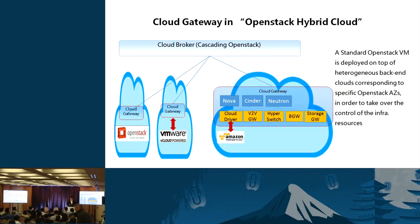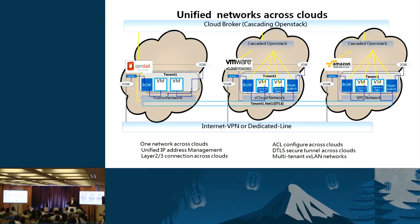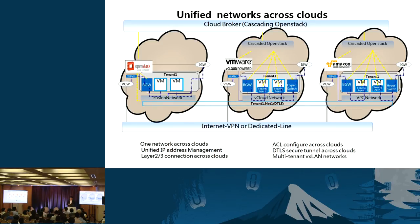These standardized cloud gateways are deployed on top of heterogeneous backend clouds corresponding to a specific OpenStack availability zone. Here we provide a deep dive into unified networking across clouds, covering one unified networking across all clouds with unified IP address management, Layer 2/3 connections across clouds, DTLS security channels, and multi-tenant overlay VXLAN Layer 2 or Layer 3 interconnectivity between clouds.